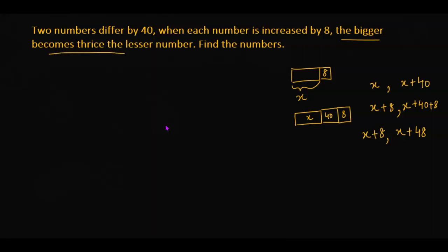Now what is the next thing given in the question? It is given that the bigger number becomes thrice the lesser number. This is the bigger number, it will become thrice the lesser number. That means three times.